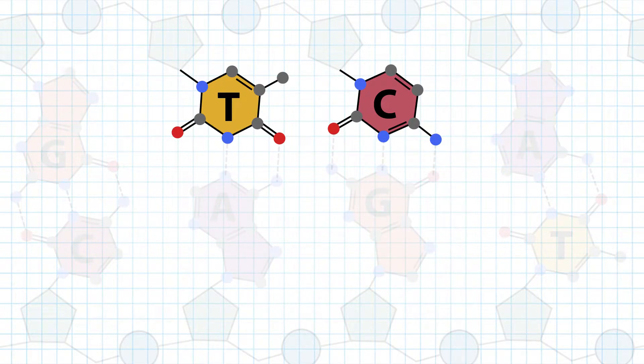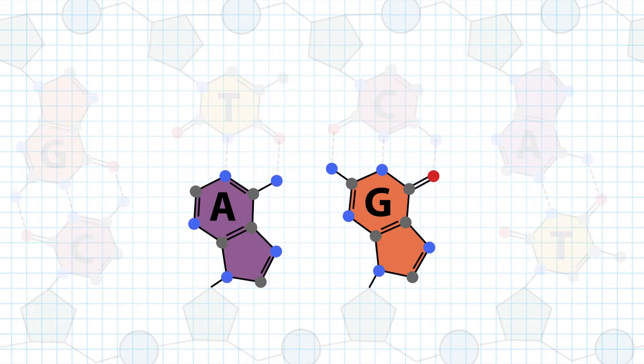Thymine and cytosine are called pyrimidines, characterized by their single ring structure. And adenine and guanine are called purines, which have double rings.